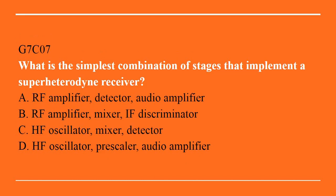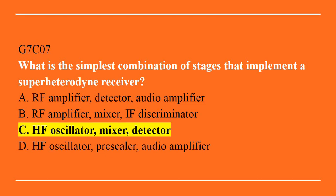G7C07: Which is the simplest combination of stages that implement a superheterodyne receiver? A. RF amplifier, detector. B. RF amplifier, mixer, IF discriminator. C. HF oscillator, mixer, detector. D. HF oscillator, pre-scaler, and audio amplifier. Answer is C. HF oscillator, mixer, detector.